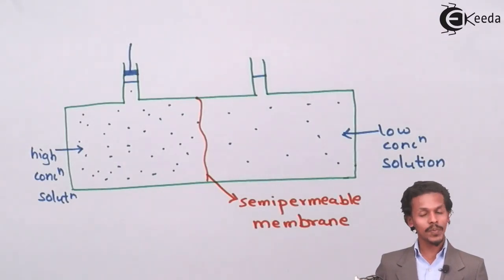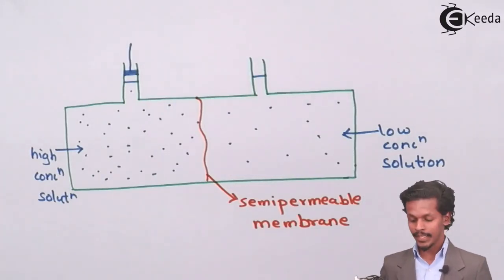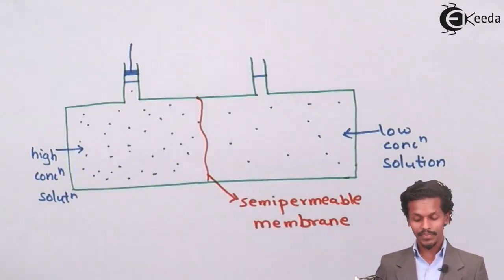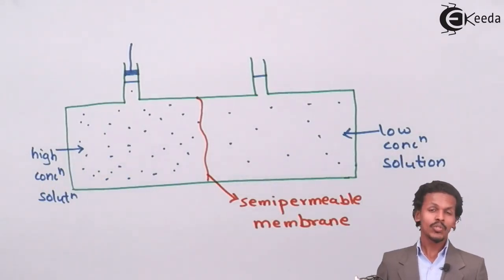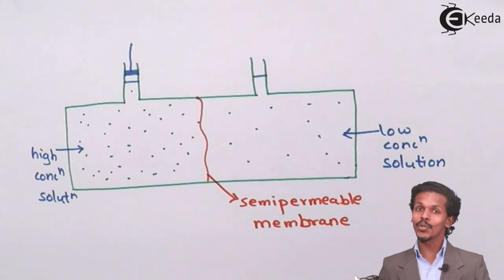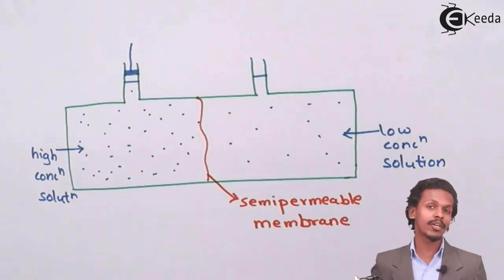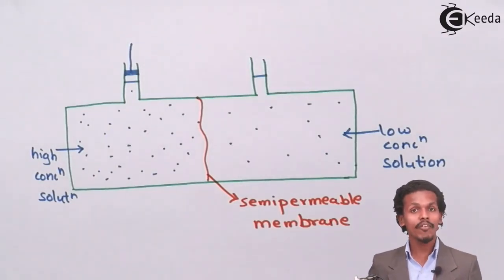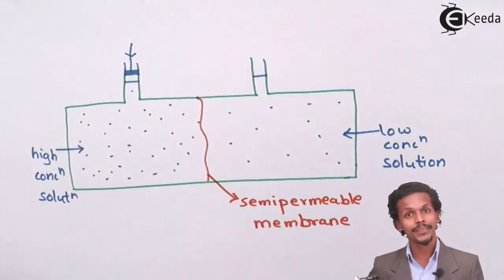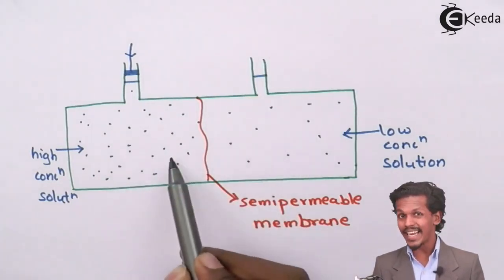Looking at the diagram, it is similar to the osmosis setup but with a key application. There is a membrane separating a high concentration solution and a low concentration solution. Naturally, in osmosis, the solvent would flow from lower concentration to higher concentration. To prevent this, we apply pressure using a piston — pressing it in the downward direction — which stops that flow.